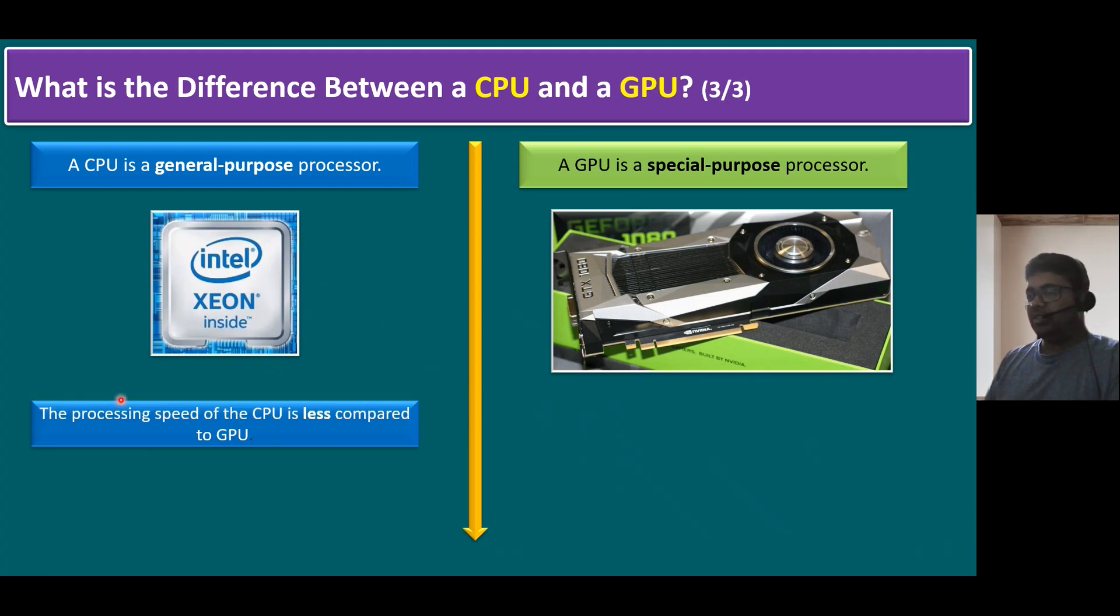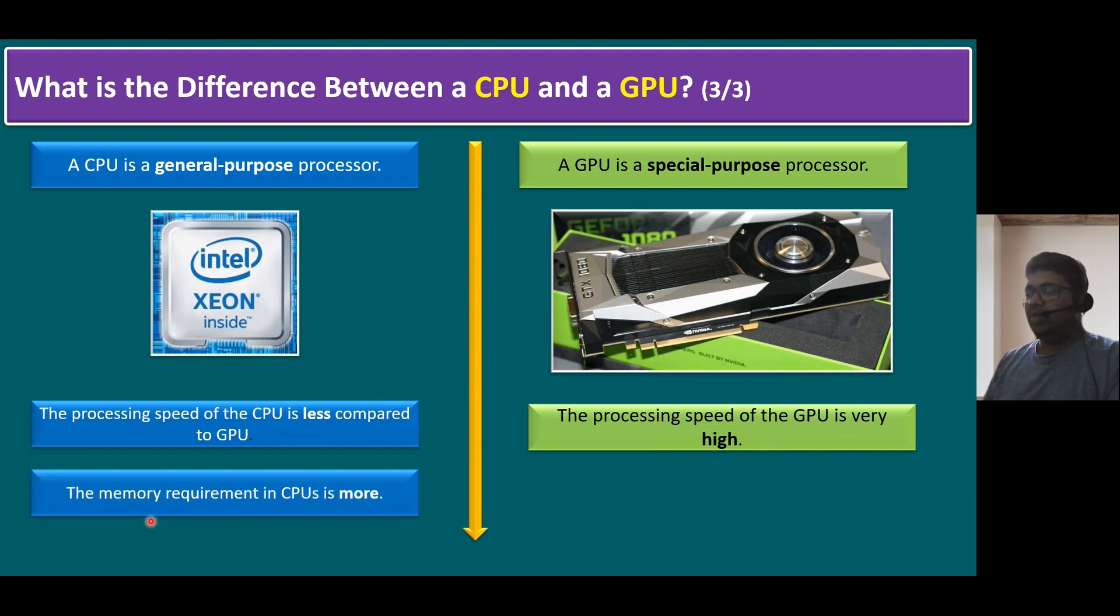When it comes to CPU, the processing speed of CPU is less compared to GPU. But in GPU, the processing speed is very high. The memory requirement in CPUs is more, but when it comes to GPU, memory requirement in GPUs is less. One example, as I mentioned, if you're buying a NVIDIA A100, it's available in multiple memory requirements: A100 with 40GB memory, A100 with 80GB memory.